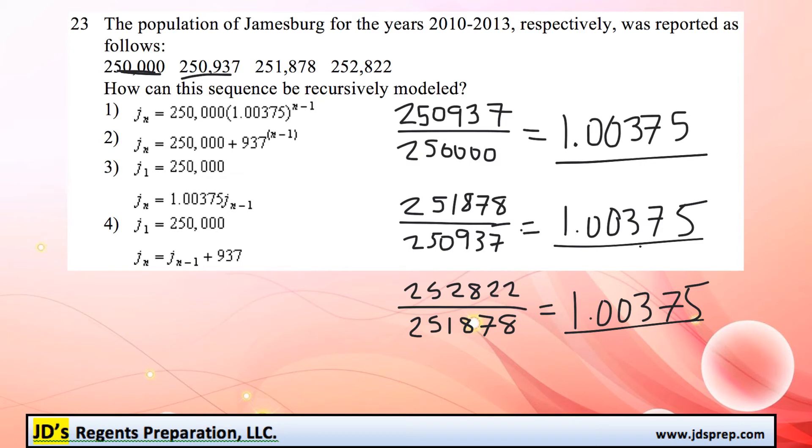And so looking to see if that happens, it does. Here in option number three, notice that it says the first term is 250,000. And then to find out every term after that, we take 1.00375 and multiply it by the previous term, just as we were talking about. So that makes perfect sense.